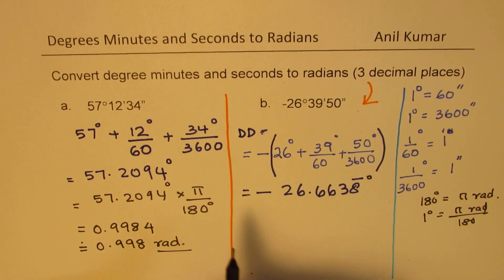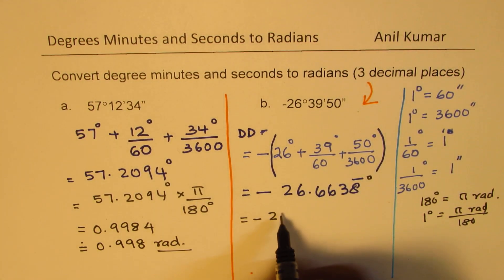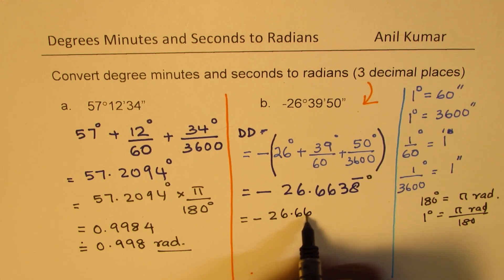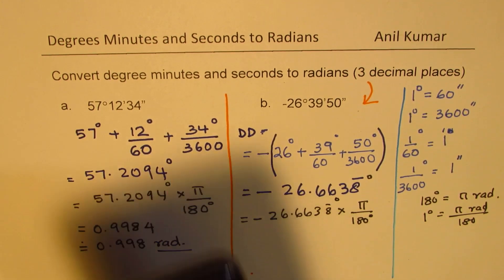Now, converting that to radians, we should multiply this by pi and divide by 180 as we did here. So we have 26.6638, and we are going to times it with pi and divide by 180 degrees. This was in degrees. Degree degree will cancel.